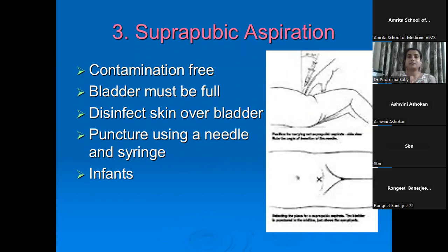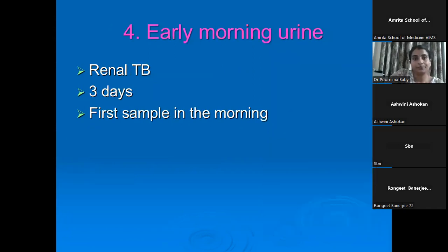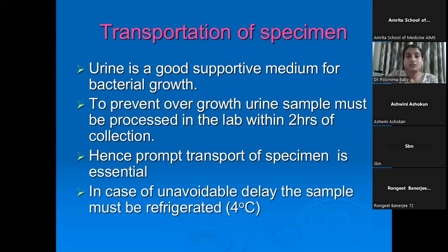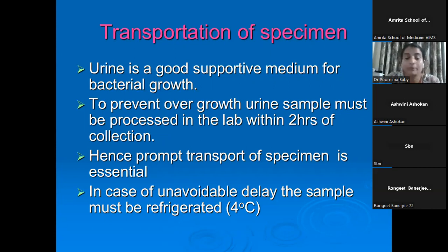Suprapubic aspiration is used especially in children and infants. The skin over the suprapubic area is disinfected and the sample is taken using a needle and syringe. The fourth type is the early morning urine, which is indicated only in cases of genitourinary TB or renal TB — sample collection is done on three consecutive days. If any delay is expected before reaching the lab, please refrigerate the sample, and send it within two hours of collection.